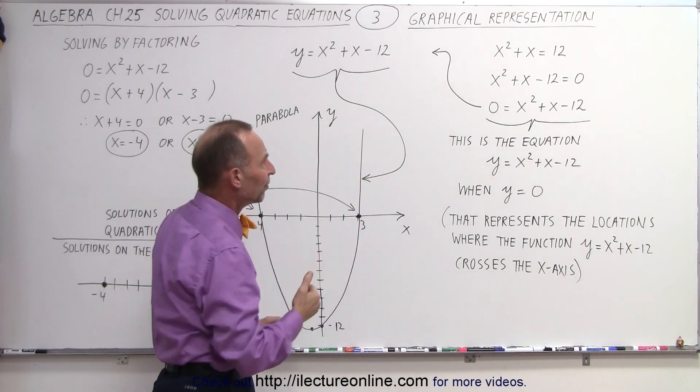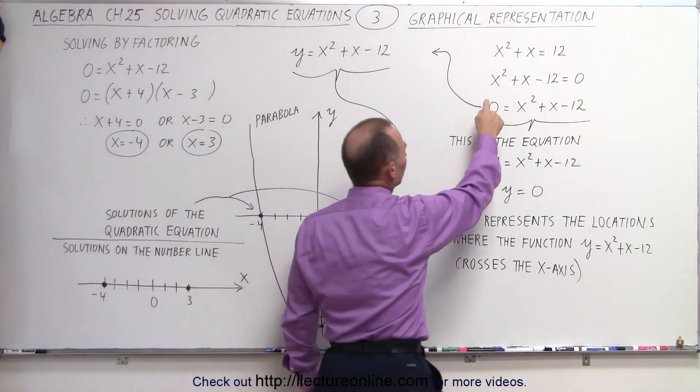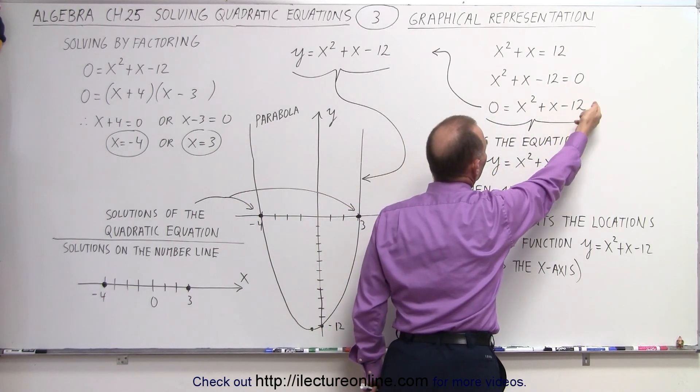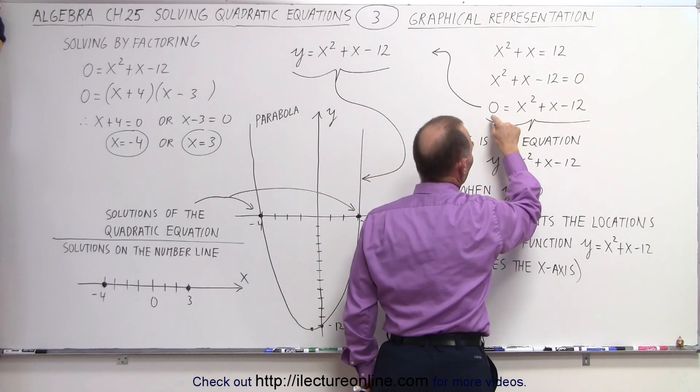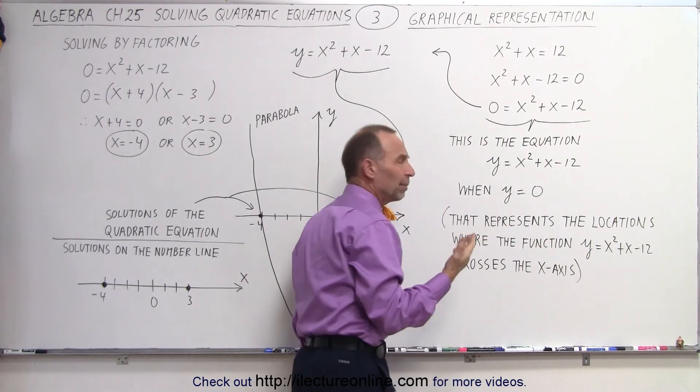Now if you move the 12 to the left side, we can then see that we have x squared plus x minus 12 equals 0. And now let's reverse the order, so we have 0 equals x squared plus x minus 12.